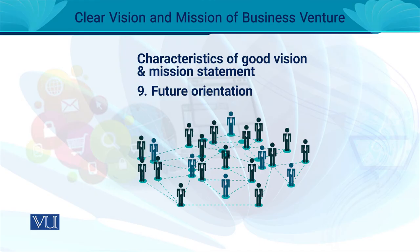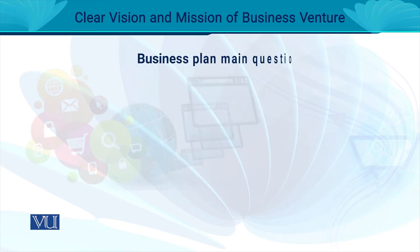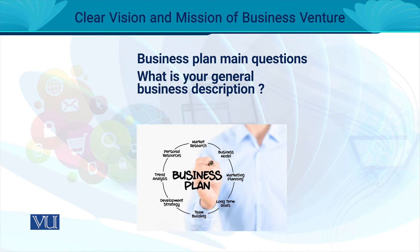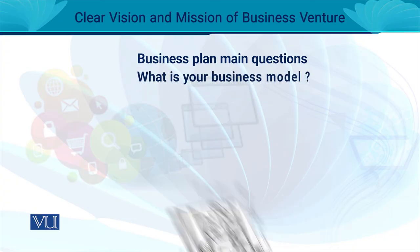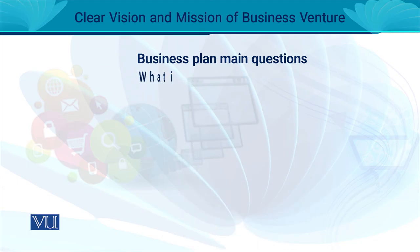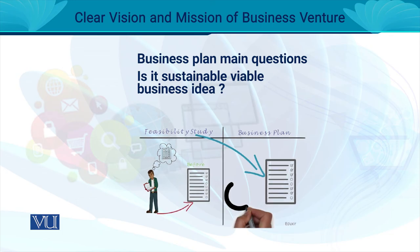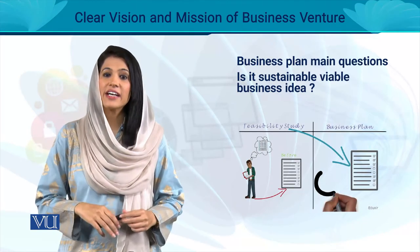From an entrepreneurial lens, when you are writing a business plan, the strategic management questions that should come to your mind are: number one, what is your general business description? What is your business model? Is it a sustainable and viable business idea? When you as an entrepreneur seek answers to these questions, you are basically forming your vision and mission statement in your mind.